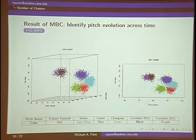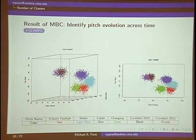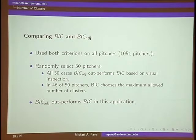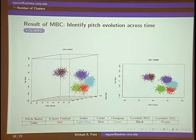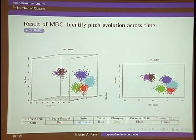I started checking out more examples to see if this method held up, and I came across Jon Lester. I said, 'Oh no, this is making a mistake' — I looked at the curveball cluster up here and it was splitting it into two different pitches. But looking closer at the data, I found that the purple cluster is actually Jon Lester's curveball in 2011 and the black cluster is his curveball in 2010. I found this really fascinating because this method was able to detect just a slight change in his profile. Even though their clusters are overlapping, it can almost completely separate out the two years. You can see his curveball in 2011 got slightly slower and the horizontal spin also changed a bit. This is a really nice advantage — we're able to detect the same pitch type changing over time.